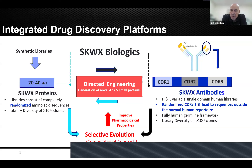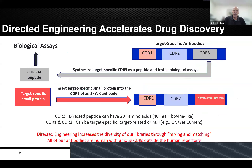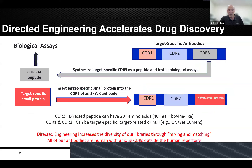We want to make these better through two approaches. One is directed engineering, which allows us to increase diversity. The second is a computational approach called selective evolution. Directed engineering is twofold: first, because it's expensive to synthesize full single domain antibodies, I discovered that if you take the CDR3 peptide out and put it in a biological assay, you can get an idea of the biological activity of the antibody itself.